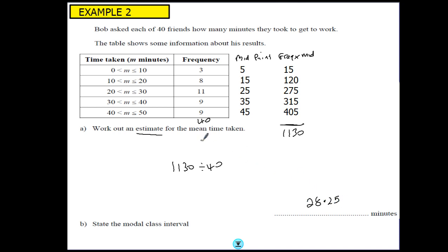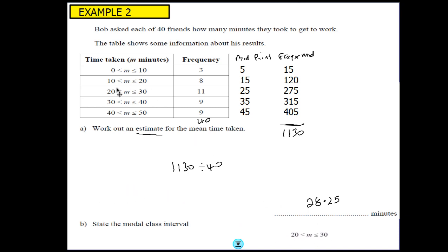Now the modal class interval. Class interval just means these groups — between 40 and 50, 30 and 40, and so on. The mode means the most common, so the modal class interval is asking which group was most commonly frequented — which one had the most people taking that amount of time. You can see that it's 11, so between 20 and 30 minutes is the modal class interval because that's the group in which most people fell.